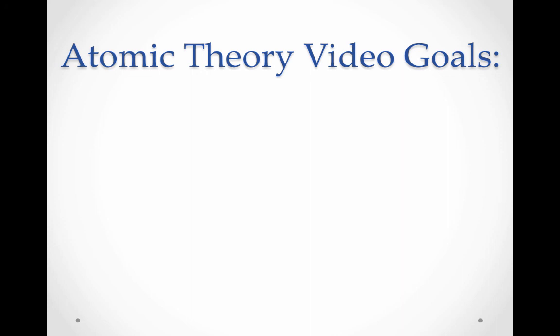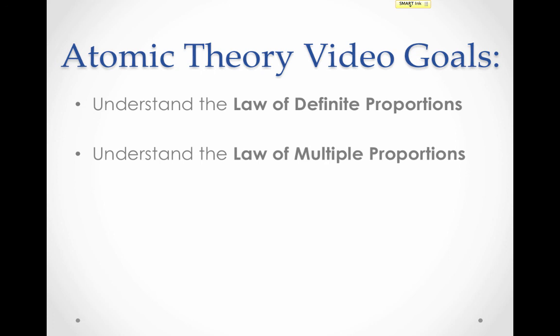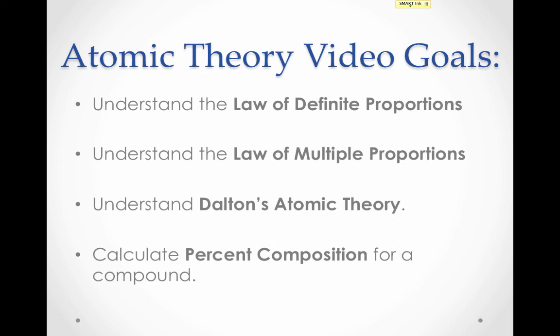That brings us to the end of this video. Let's review our goals. First, we looked at the law of definite proportions, which said that elements always combine in the same proportions in a given compound. Then, we looked at the law of multiple proportions, which said that when you compare the mass of one element to one gram of a different element in different compounds, there was always a whole number ratio. We gave the example of carbon monoxide, CO, and carbon dioxide, CO2. Then, we looked at Dalton's atomic theory. Finally, we learned to calculate percent composition for a compound, where we divide the mass of one element in the compound by the mass of the entire compound.